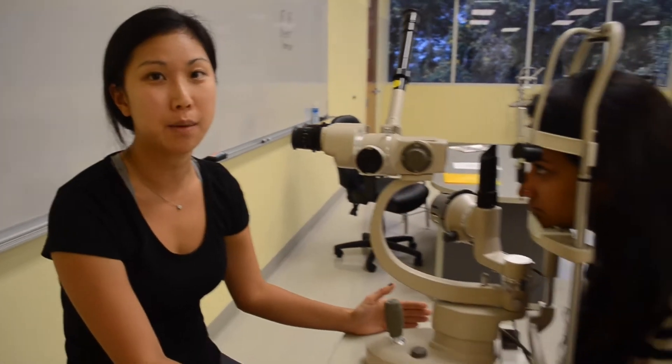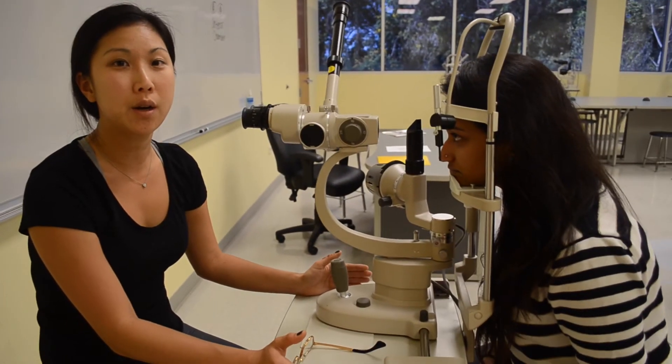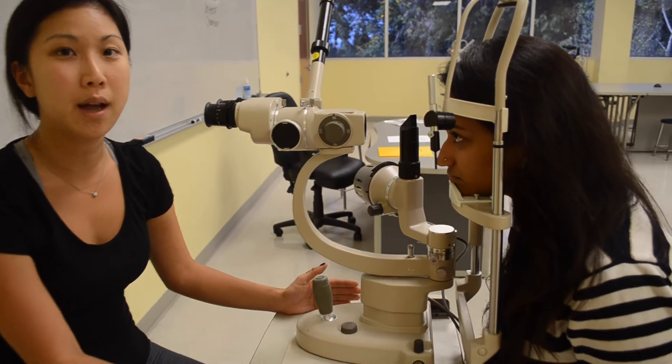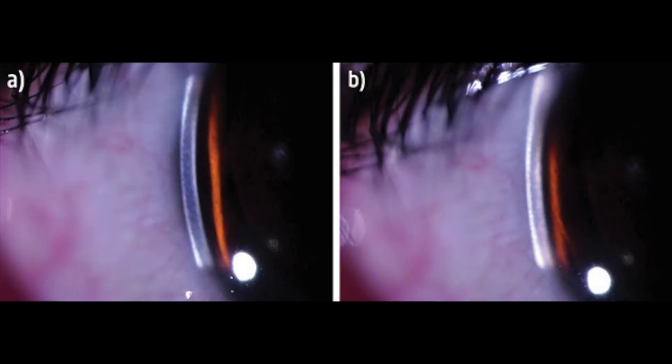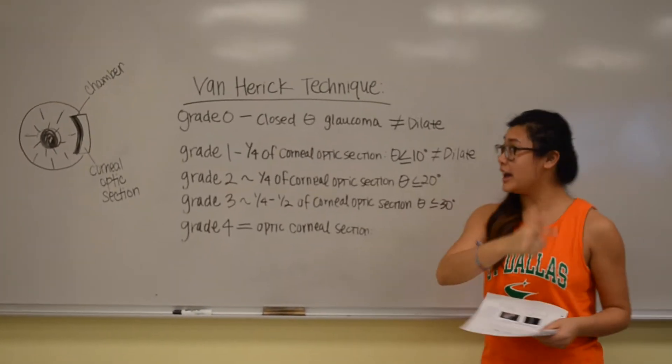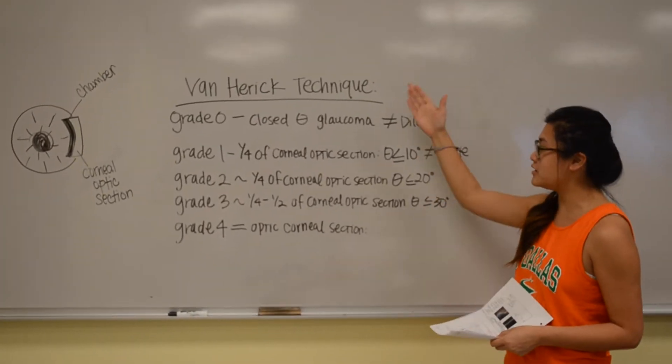The purpose of the Van Heerick technique is to determine the space between the cornea and the iris, to see the outflow of the aqueous humor from the posterior chamber to the anterior chamber. Grade 0 is basically closed-angle glaucoma, and then there's grade 1, 2, 3, and 4, which determines the risk for the level of glaucoma. So these are our grades.